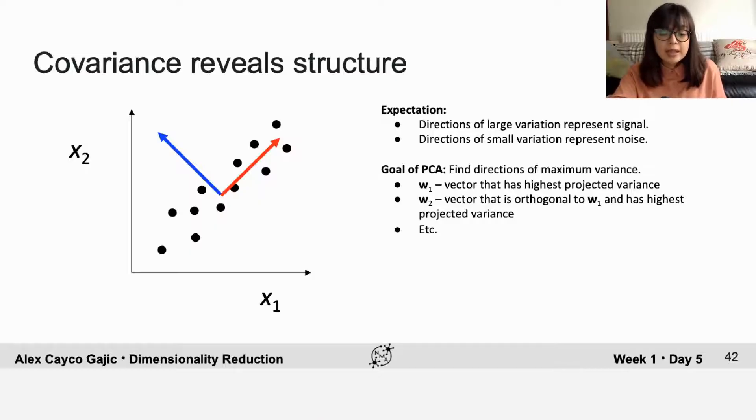You don't actually have to do this iteratively because you can write down the mathematical solution, which is that the vectors are the eigenvectors of the covariance matrix.